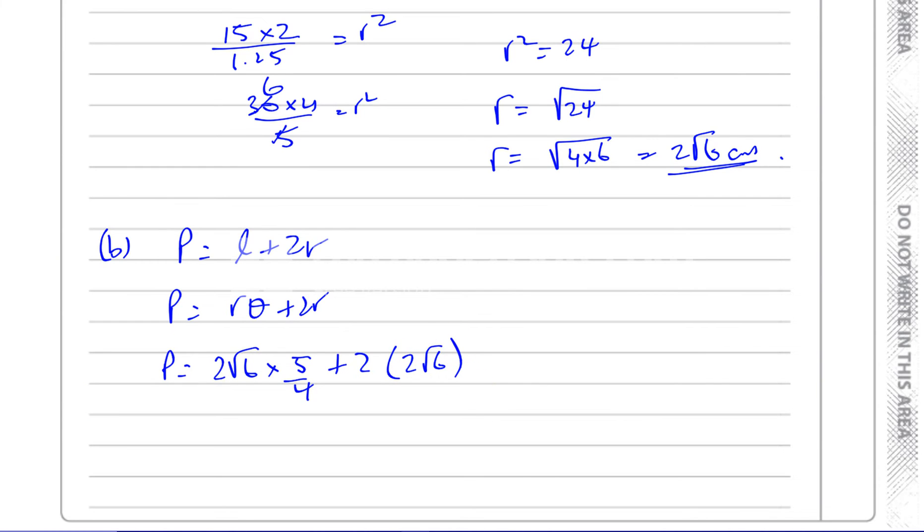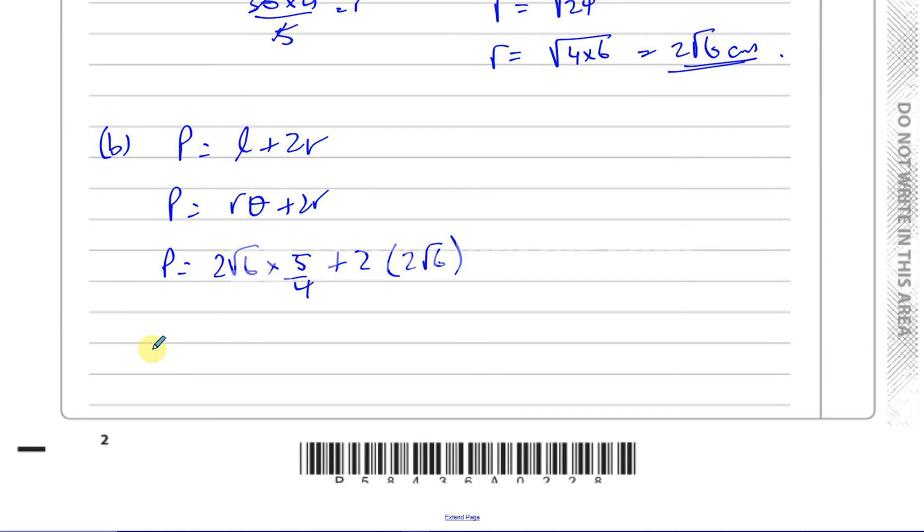So that gives us, the 2 cancels, this 4 gives you 2. So you're left with 5 times root 6 over 2 plus 4 root 6. So if you make these the same denominator, that's like 8 over 2. So you get that would be like 8 over 2 times root 6. So you're left with 13 over 2 root 6. And that's in centimeters. That's the perimeter of the shape.